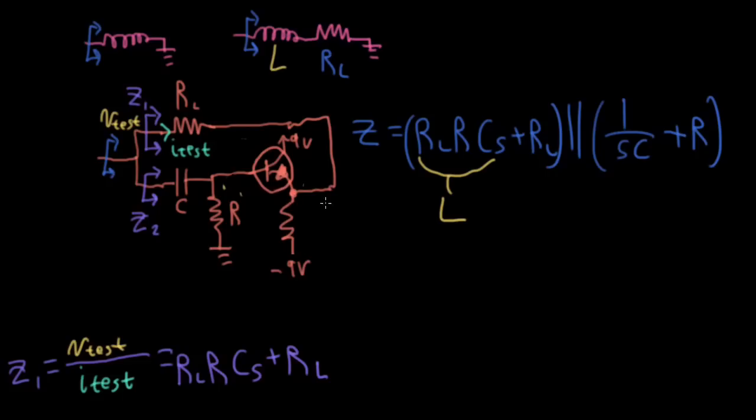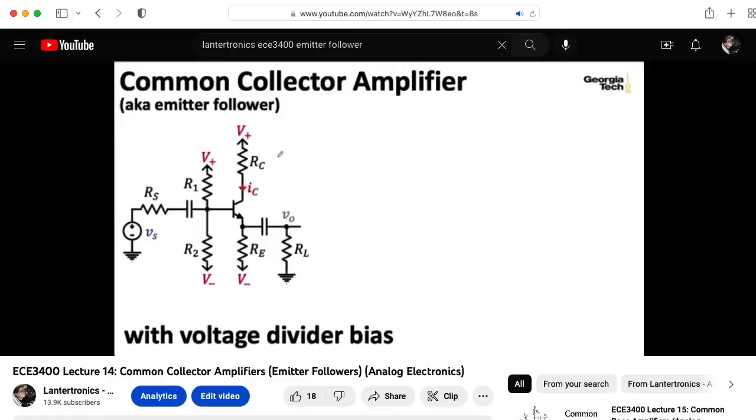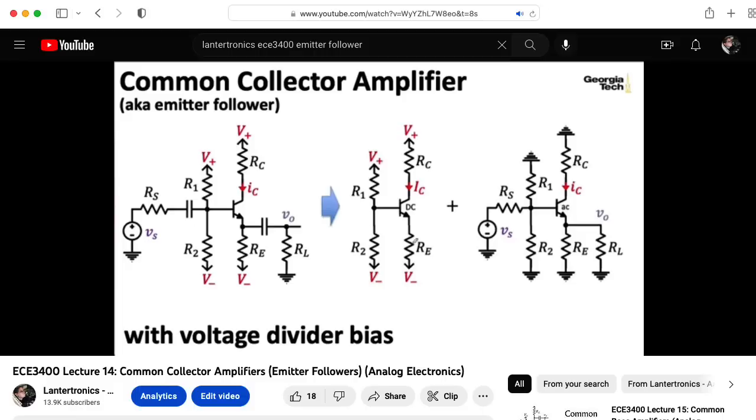But the way this is usually used is that this inductor resistor network here is actually put in series with a capacitor. So essentially that DC drop winds up being irrelevant from a small signal standpoint, because it winds up being blocked by these capacitors anyway. If you would like to know more about emitter followers, you can check out my lecture on the topic in my ECE 3400 analog electronic series.